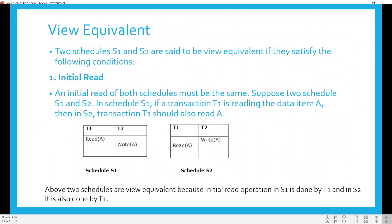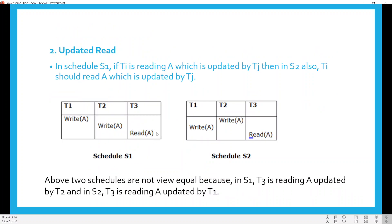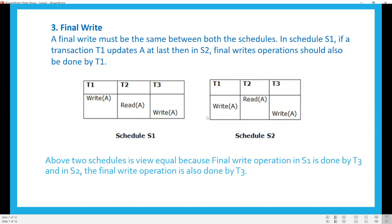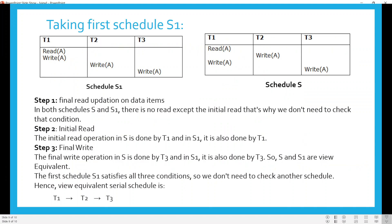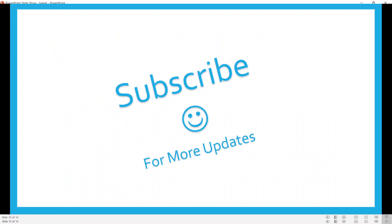So this is how we check for view serializability. We check three conditions: initial read — the same transaction should read the initial value in both schedules; updated read — if a read of a data item is produced by a particular transaction's write, the same must hold in the second schedule; and final write — the same transaction must perform the last write in both schedules. By this example I hope you understood what is meant by view serializability and how to find the view equivalent serial schedule. Thanks for watching.